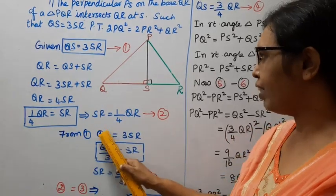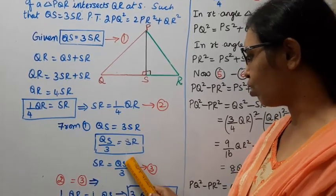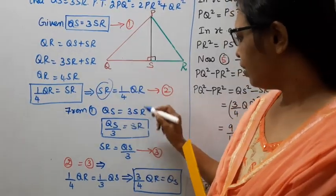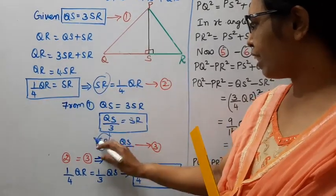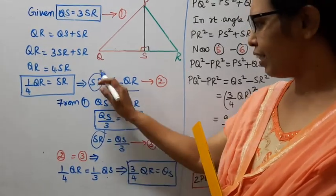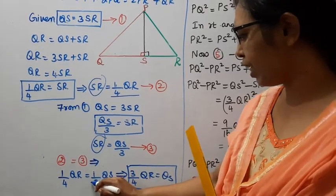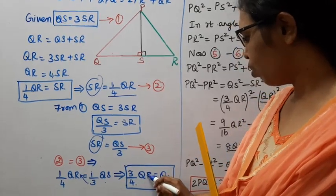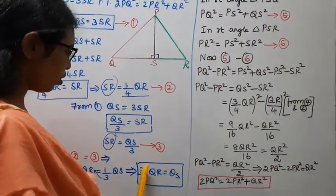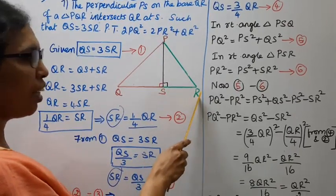Also SR equals QS by 3. From these two expressions, 1 by 4 QR equals 1 by 3 QS. Solving, QS equals 3 by 4 QR. So we have SR equal to 1 by 4 QR and QS equal to 3 by 4 QR.